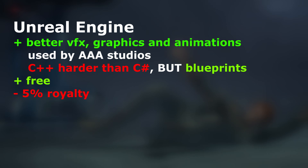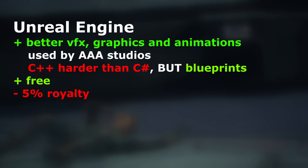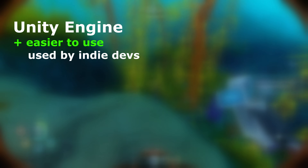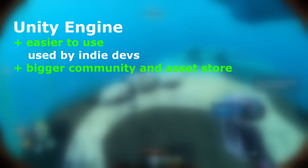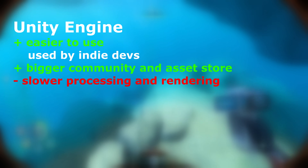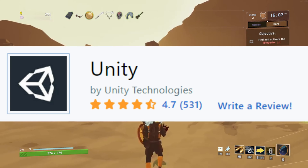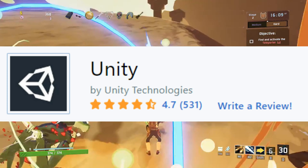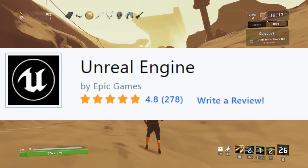However, when you put out a game, Epic Games wants a 5% royalty from all of the game's sales. Unity Engine, on the other hand, is much easier to use and therefore is mostly used by indie devs. The community and Asset Store are also much bigger than Unreal's. However, when we get to the engine itself, it has slower processing and rendering. As the coverage shows, both are capable of quality products and are on a very similar level.